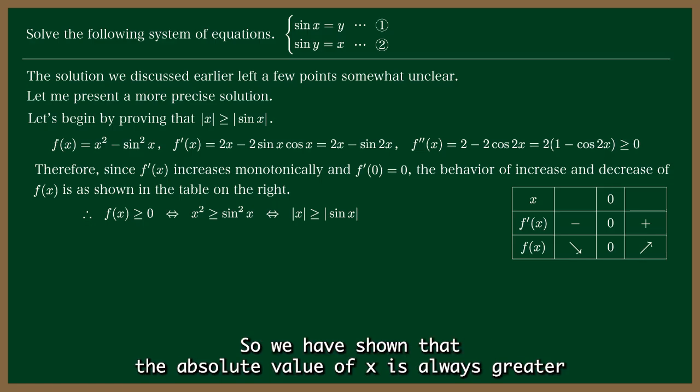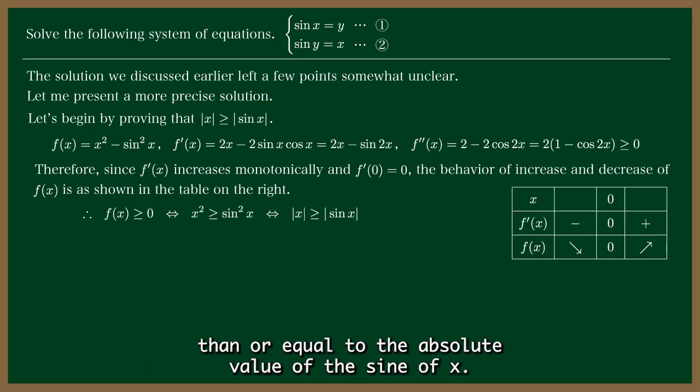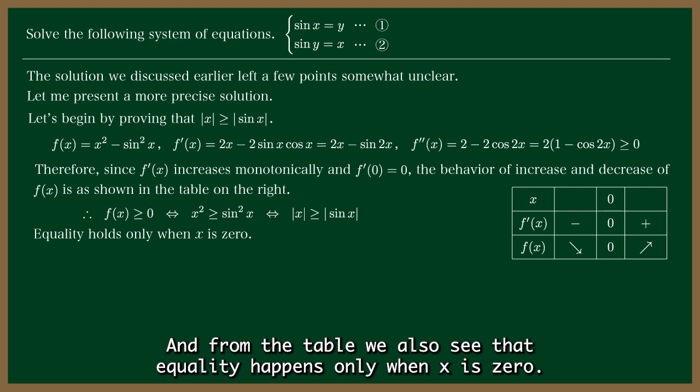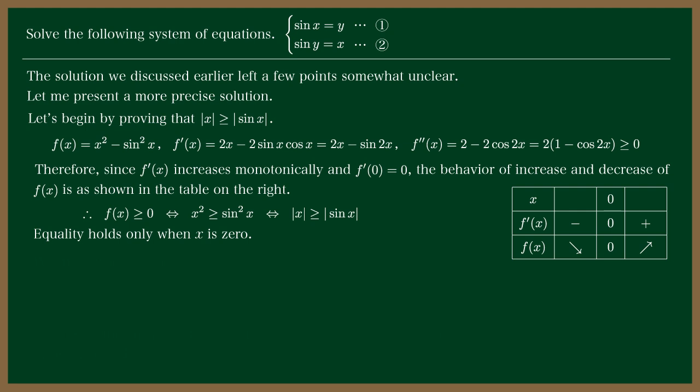So we have shown that the absolute value of x is always greater than or equal to the absolute value of the sine of x. And from the table, we also see that equality happens only when x is 0. Now, let's go back to the main problem.